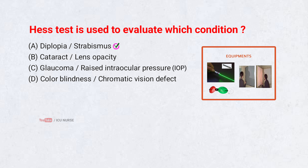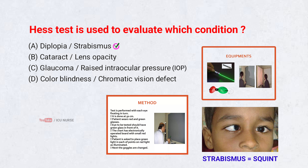Diplopia/strabismus. The HES test maps eye movements to detect which extraocular muscle is weak. It is mainly used to evaluate diplopia and strabismus, conditions caused by misalignment of the eyes.